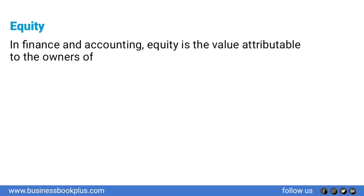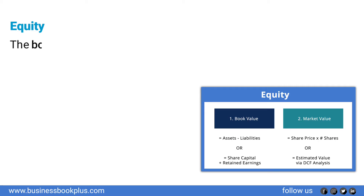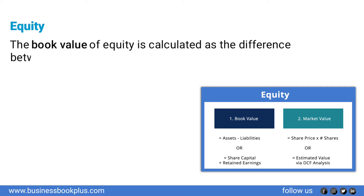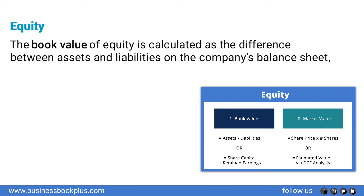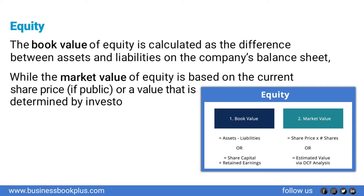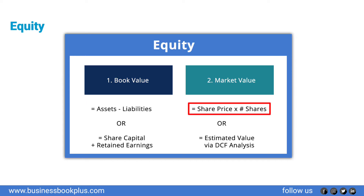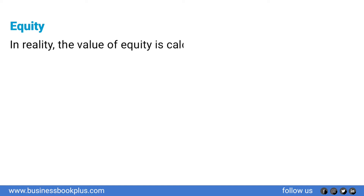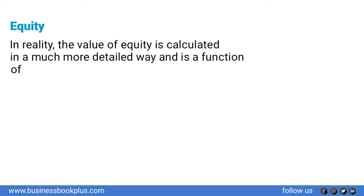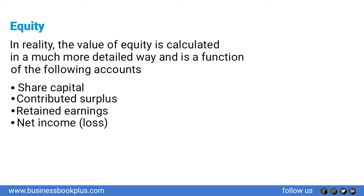In finance and accounting, equity is the value attributable to the owners of a business. There are two types of equity value: book value and market value. Book value is calculated as assets minus liabilities on the balance sheet, while market value is based on share price multiplied by shares outstanding. Equity is a function of share capital, contributed surplus, retained earnings, net income or loss, and dividends.